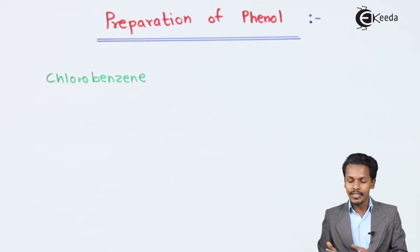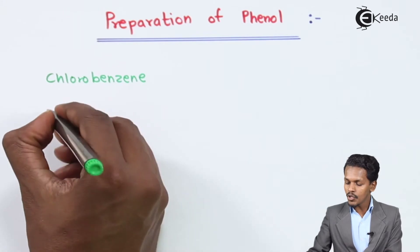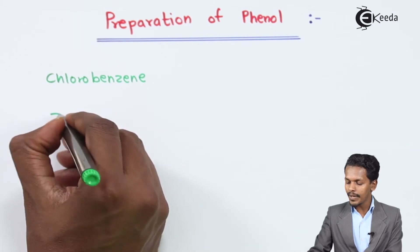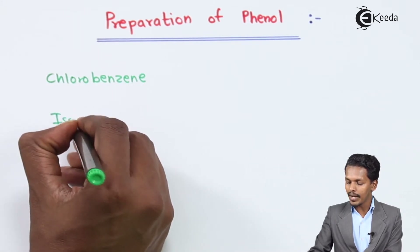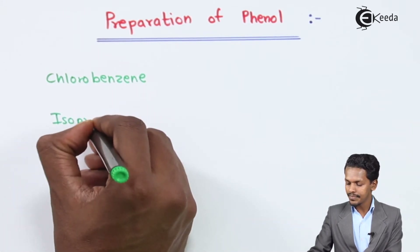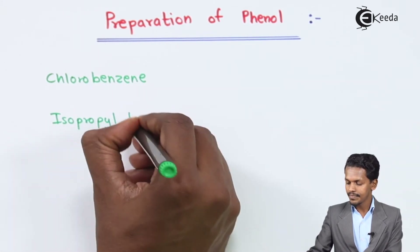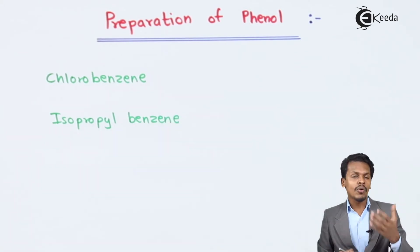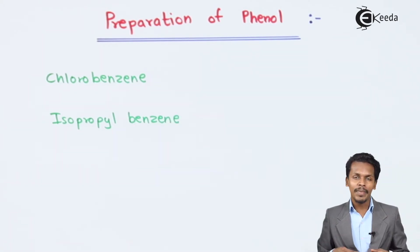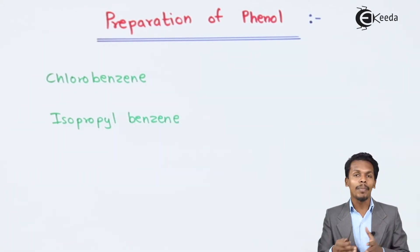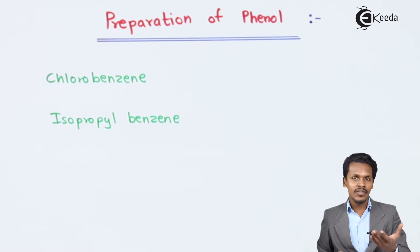We can also prepare phenol by using isopropyl benzene. On oxidation of isopropyl benzene, which is also known as cumene, we can obtain phenol.